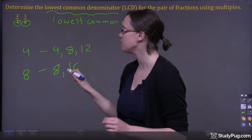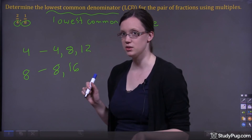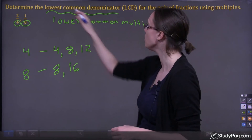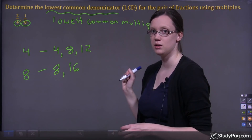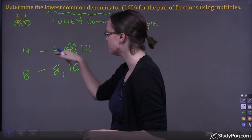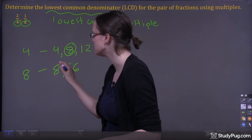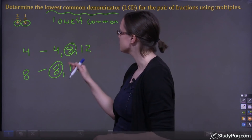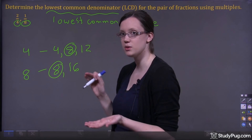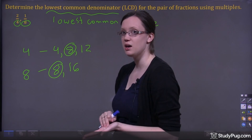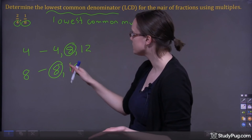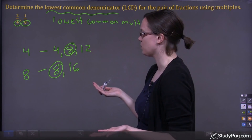As you can see, we already have a common multiple. Remember, we're looking for our lowest common multiple or our lowest common denominator. So our lowest common denominator is 8, because 8 is a multiple for both 4 and 8. This is our lowest common multiple or our lowest common denominator — it's our lowest common denominator because 4 and 8 are our denominators in our fractions. So we found those, and that's our answer for this question.